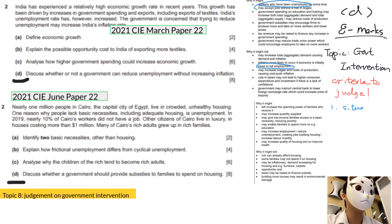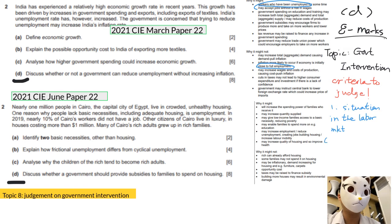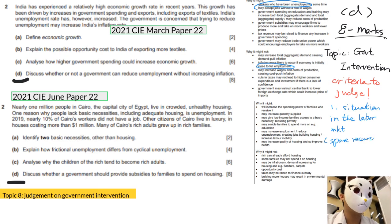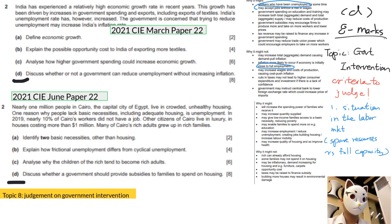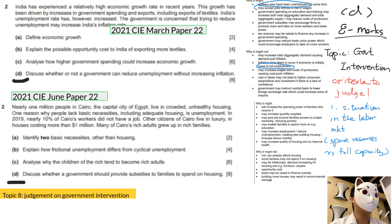The first criterion asks whether there are spare resources, such as unemployed workers, or whether the economy is at full capacity. In economic terms, this means considering whether the aggregate supply (AS) curve is upward sloping or vertical. When judging whether the government should intervene, it depends on the situation of the labor market.